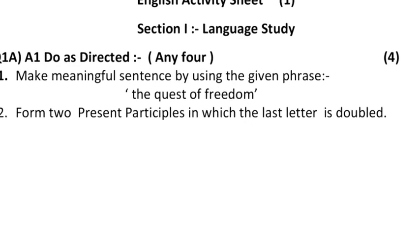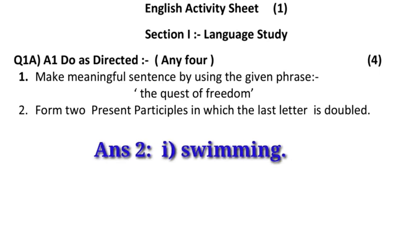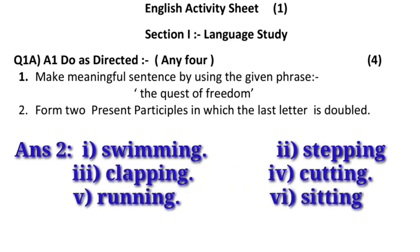Now let us see the second one: form two present participles in which the last letter is doubled. You have to form verbs in which the last letter is doubled and '-ing' is added — this is called the present participle. The answers are: swimming, stepping, clapping, cutting, running, and sitting. As you can see, in 'swim' the letter 'm' is doubled and '-ing' is used. So the last letter is doubled and all these words are present participles.